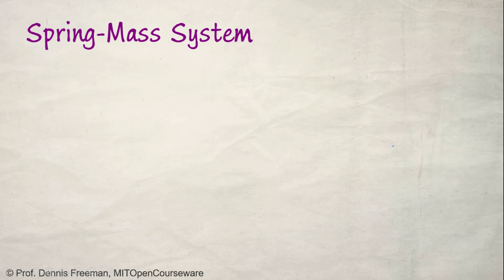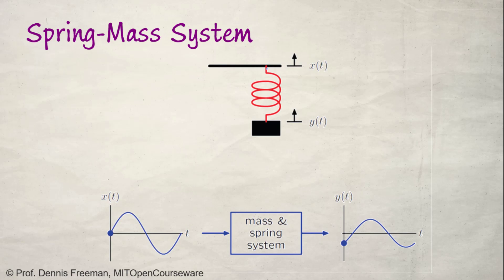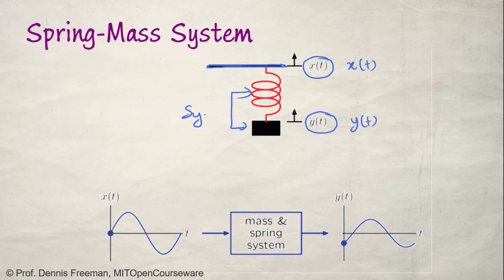The next example is a spring-mass system. Assume we have a spring with a mass attached at one end and the other end attached to a stick. We move the stick in a periodic manner, and the movement of the stick is denoted as X of T. Based on this, the mass at the end of the spring will move, and that is denoted as Y of T. The spring and mass together make the system; the input signal is the movement given to the stick, and the output signal is how the mass at the end of the spring is moving.